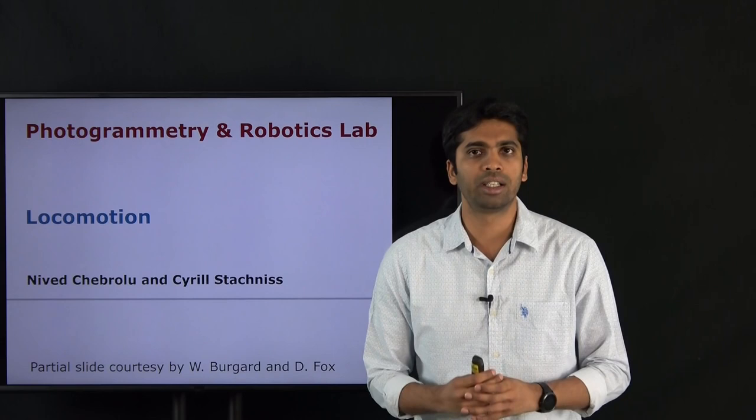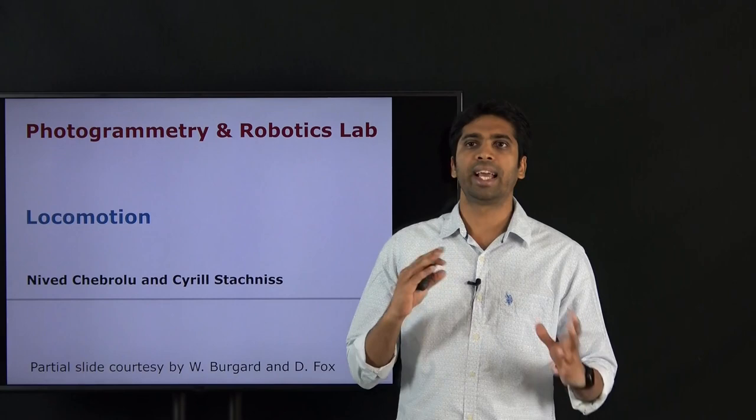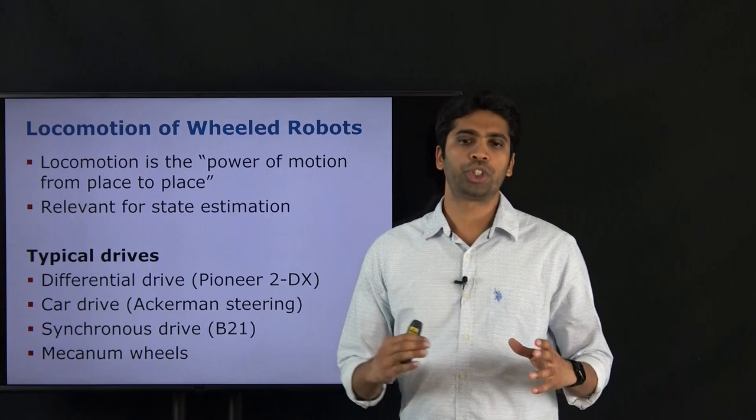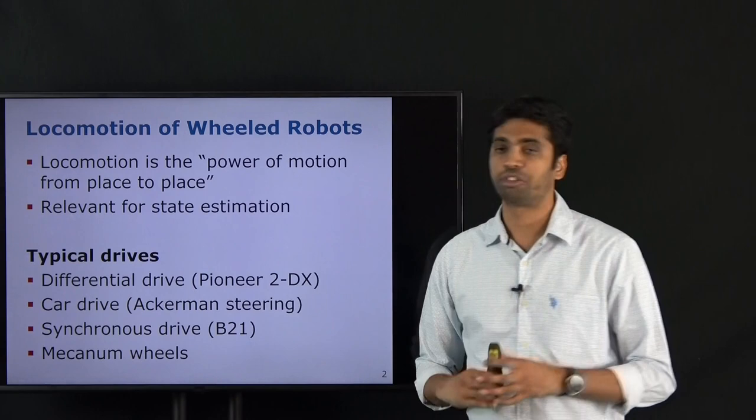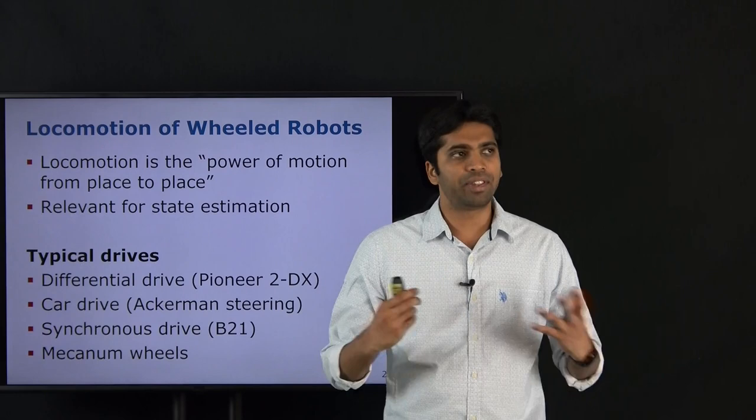A couple of reasons to focus on wheeled robots: one, they are one of the most common kinds of platforms available around us and therefore very useful to know how they work; and two, the analysis is quite straightforward, which lets us understand the principles in a rather simple manner. So what does locomotion really mean? The definition is the power of motion from place to place — essentially, how to move from point A to point B in your environment.